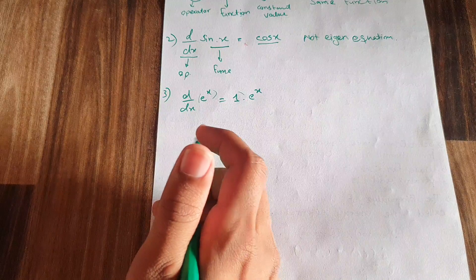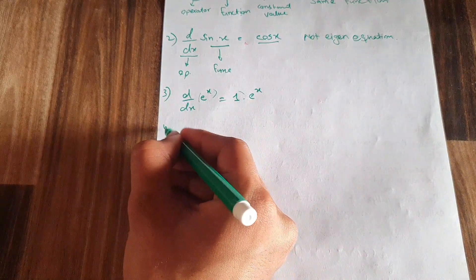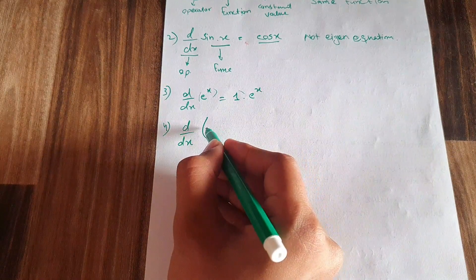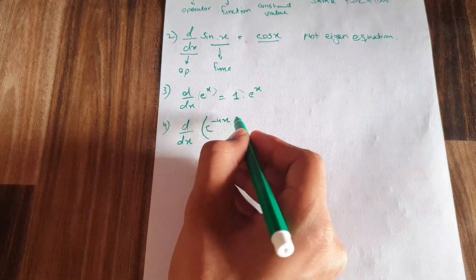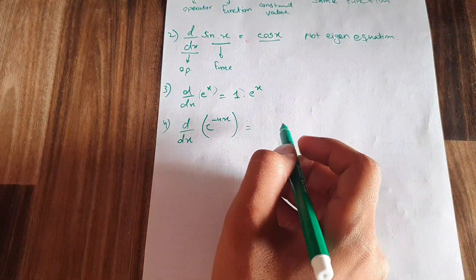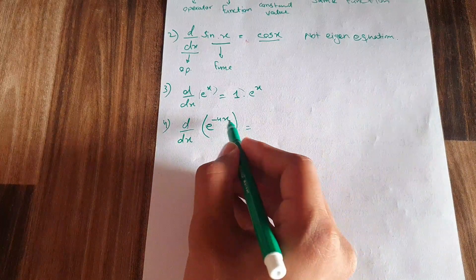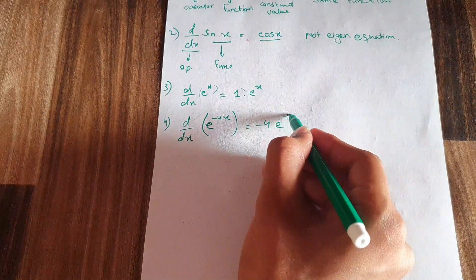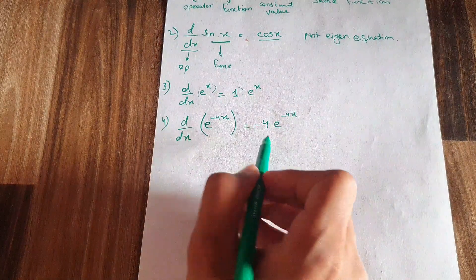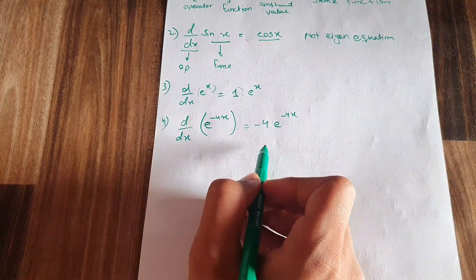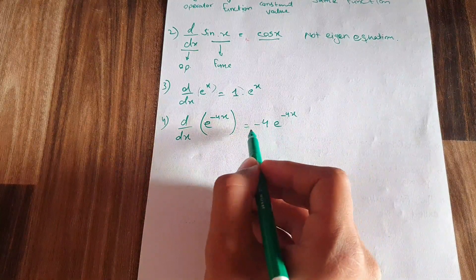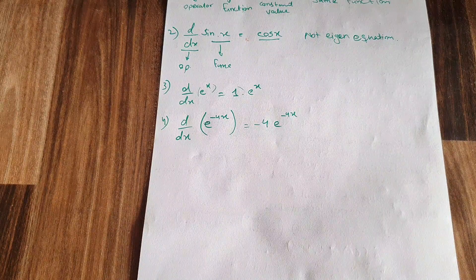Another example: d/dx · e^(-4x). The derivative of this equation comes out to be -4 · e^(-4x). The function e^(-4x) is repeated and -4 is the eigenvalue. So this is an eigenvalue equation with an eigenvalue of -4.